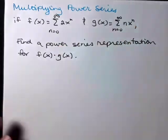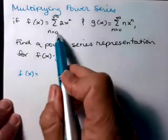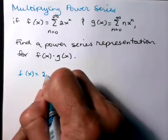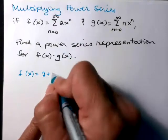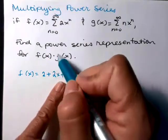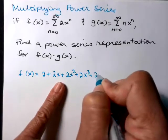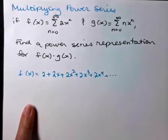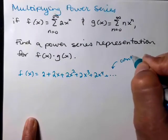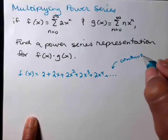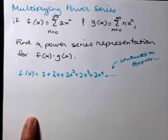So let's write out a few terms of f. f(x), we're just going to plug in the n value. If n is 0, x^0 is 1 times 2 is 2. If n is 1, I'll have 2x. If n is 2, 2x², 2x³, 2x^4, and so on. Plus dot dot dot means it just continues on forever.